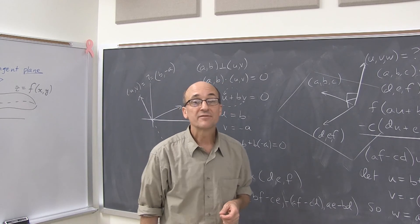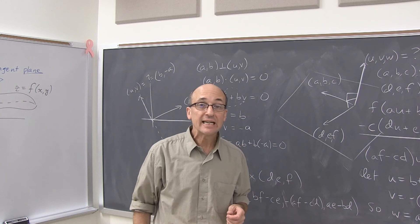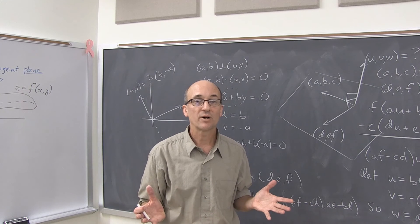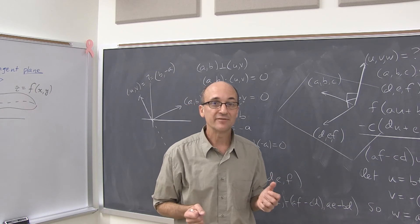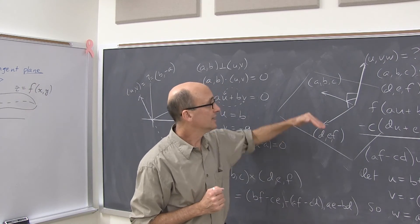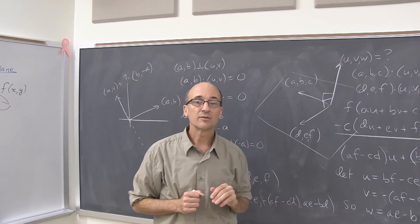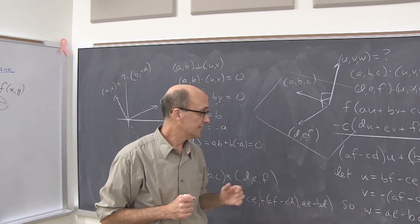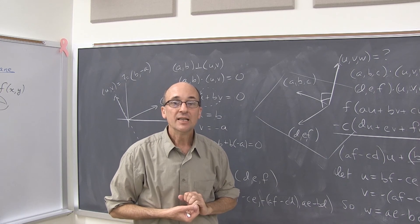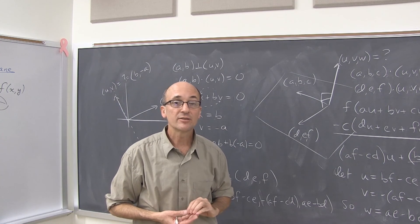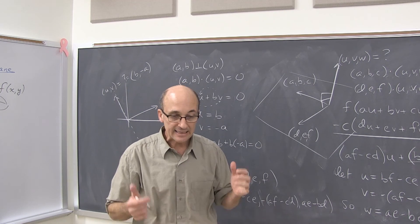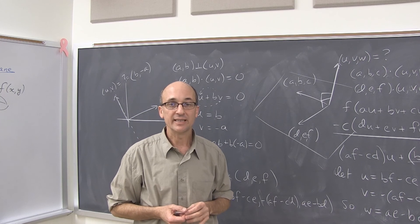To summarize, we have solved the problem of finding a normal direction to a plane in three-dimensional space. That is using the cross product. Again, this is defined as a vector perpendicular to two given vectors. Given (a, b, c) and (d, e, f), the cross product is this quantity, which I won't read to you again. It's there on the screen. The cross product is the standard tool for accessing normal directions in three-space and is used in many, many applications.